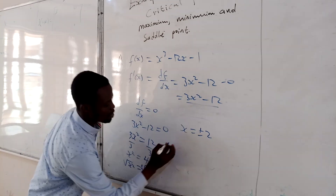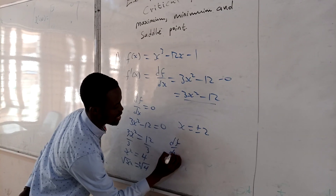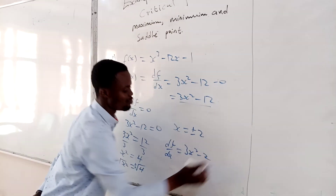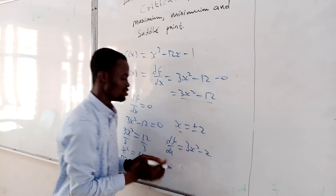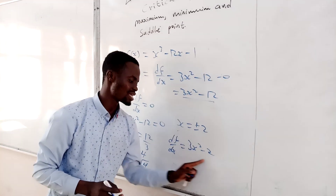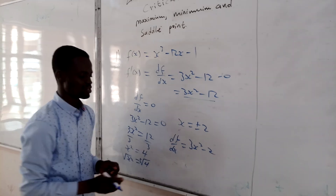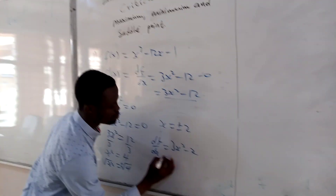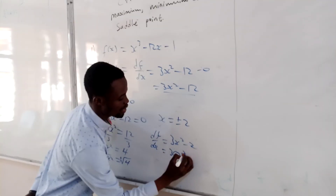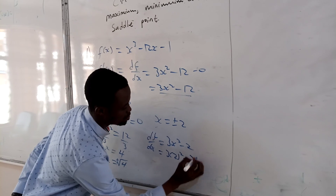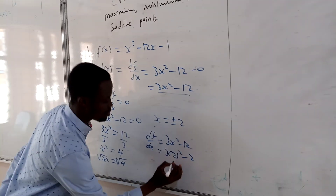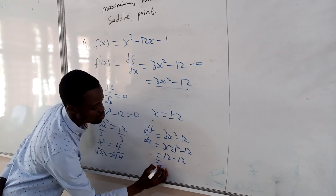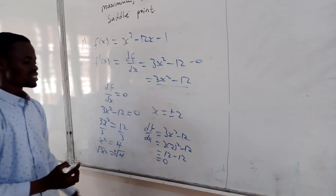When we have df/dx equal to 3x² minus 12, if you want to verify the critical points, you put the values inside the equation and check that it goes to 0. So putting in x = 2: 3 times 2 squared minus 12 equals 12 minus 12 equals 0. And putting in x = -2: 3 times (-2)² minus 12 equals 12 minus 12 equals 0.